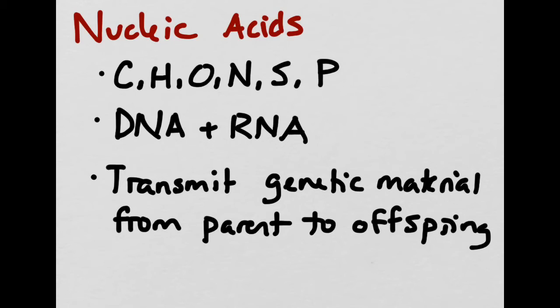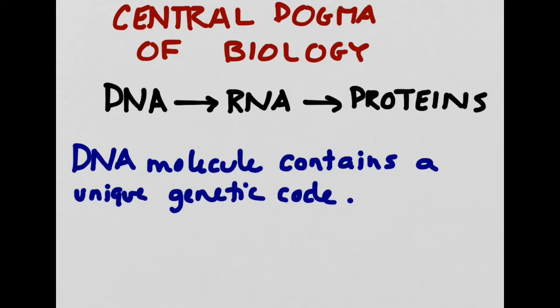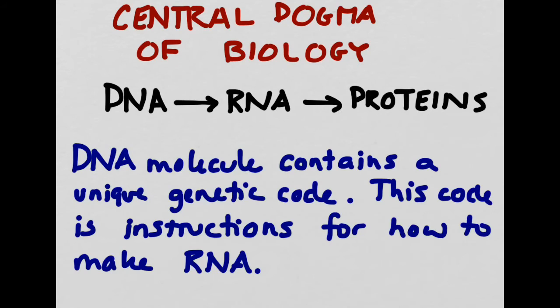This last point is going to be key as we learn about what we call the central dogma of biology. The central dogma of biology explains exactly how parents pass on genetic information to their offspring and exactly how those instructions are carried out. DNA contains a unique genetic code. This code is the instructions for how to make a single-stranded molecule called RNA.